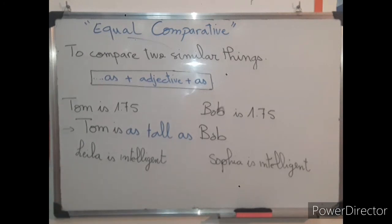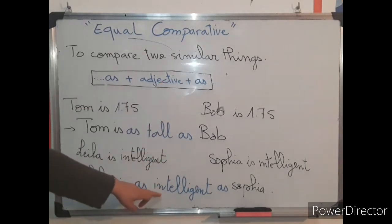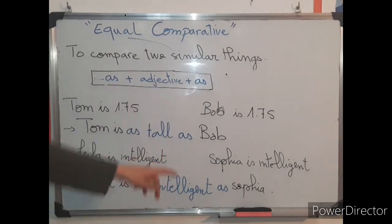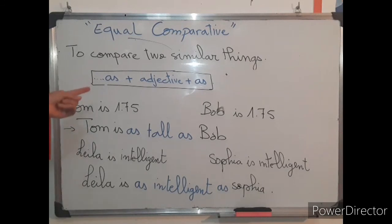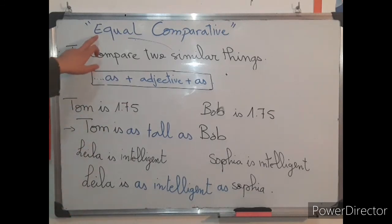Another example: Leila is intelligent and Sophia is intelligent — both are equally intelligent. So we say 'Leila is as intelligent as Sophia.' This means they are the same, similar, equal. I hope the comparative and the equal comparative are quite clear.